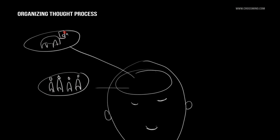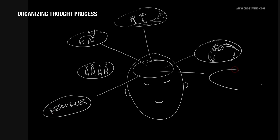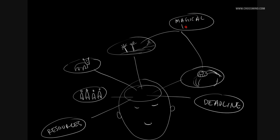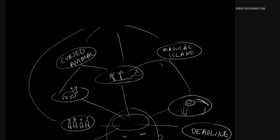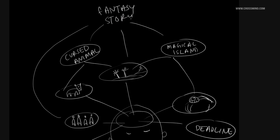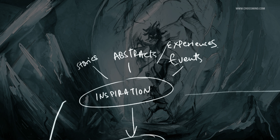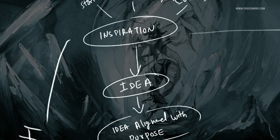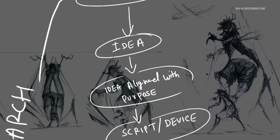Organizing the thought process: our brain gets thoughts in very rapid succession — one thought chains into more and it keeps building. When working with constraints it's important to identify and freeze these thoughts to reach a conclusion. There is always an inspiration point — something inspires us and we have an idea. The inspiration can come from anything: real life, experiences, events, images, or something abstract. The idea then needs to align with a purpose — for example, if making an ad film, the idea needs to deliver the message the ad needs to convey.